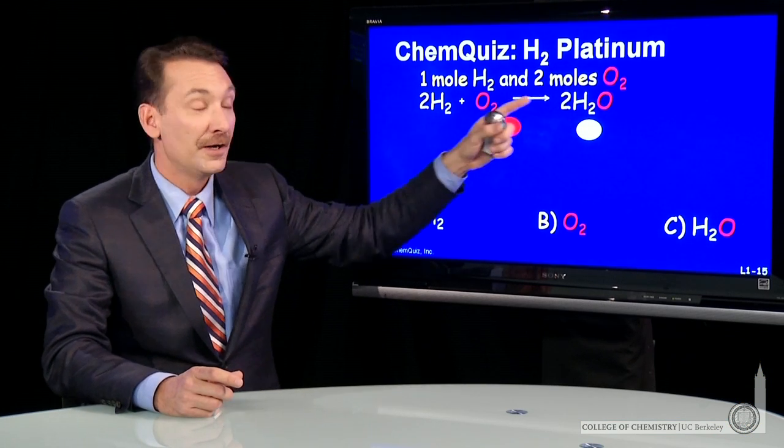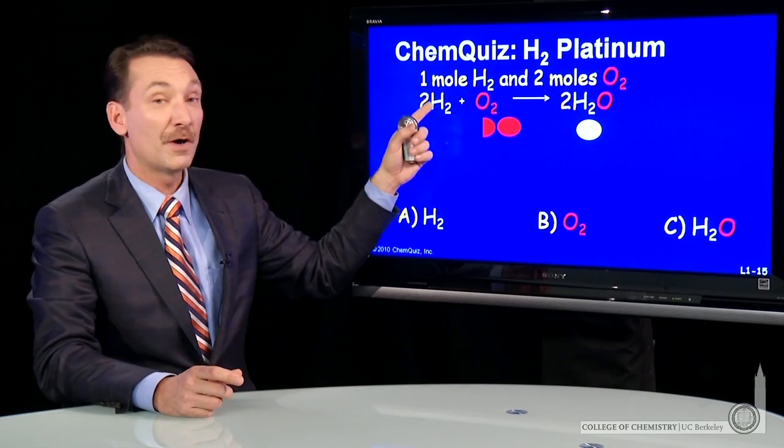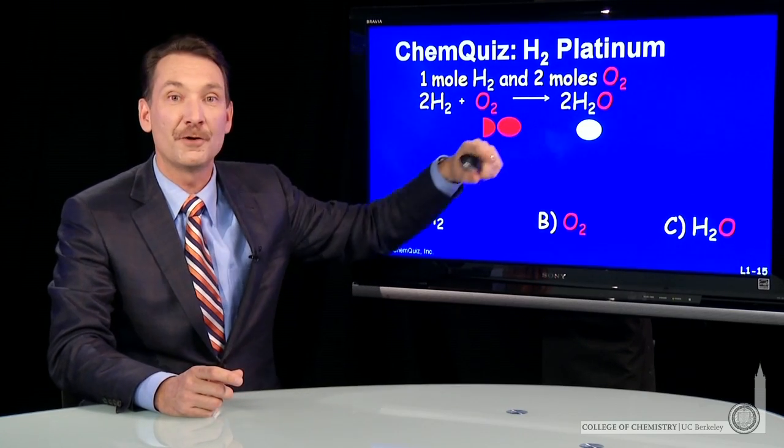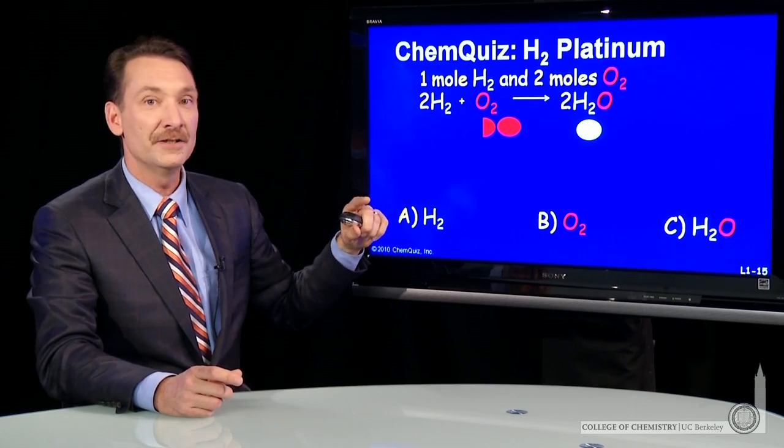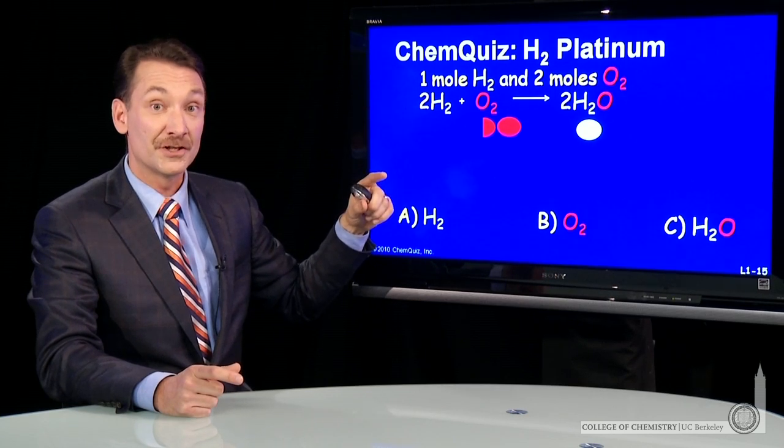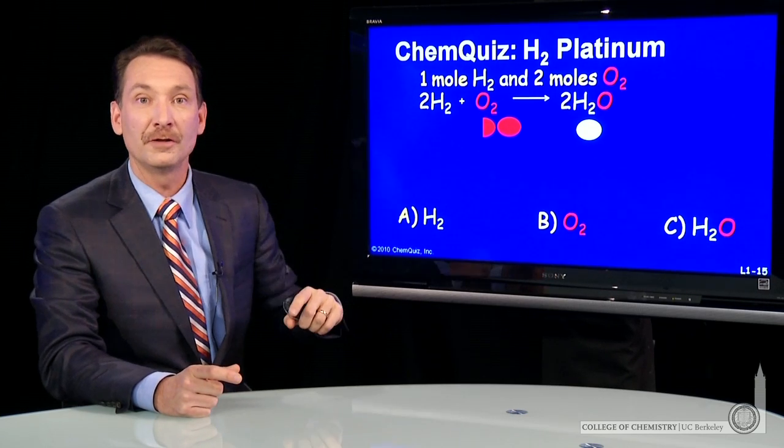Hydrogen and water will produce in one-to-one ratios. They have the same stoichiometric coefficient. So one mole of hydrogen, if there's enough oxygen, which there is, will produce one mole of water.